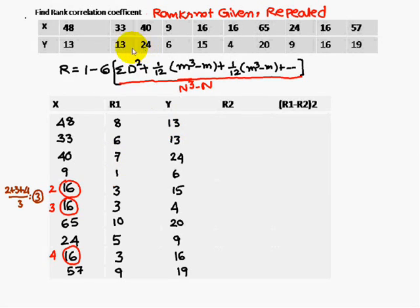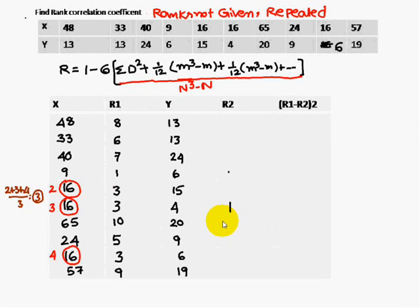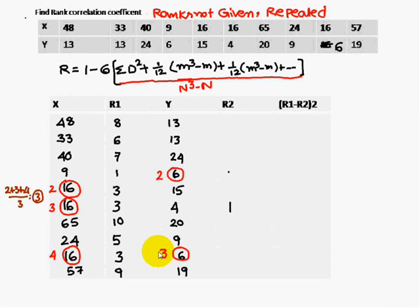Similarly, for the Y column, we write the data and assign ranks. The least value gets rank 1. The next highest value is 6, and there are two 6s. They would take ranks 2 and 3, so the average is 2.5. Both 6s are assigned rank 2.5.